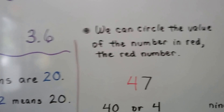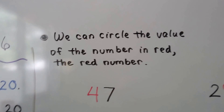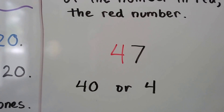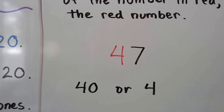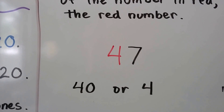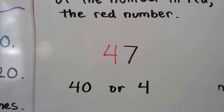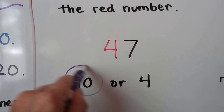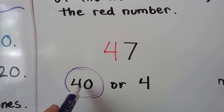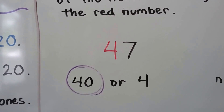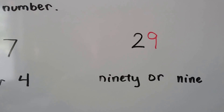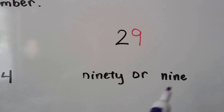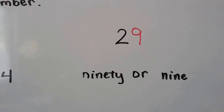We can circle the value of the number in red. The red number in this number is the red four — is it forty or a four? Which place value is it in? If you said forty, you're correct. It's in the tens place; it means forty.